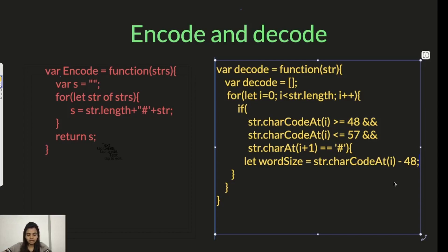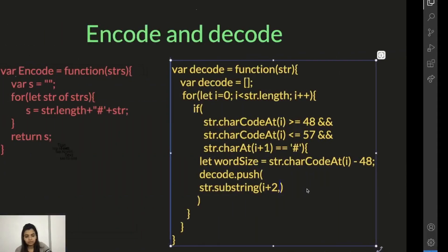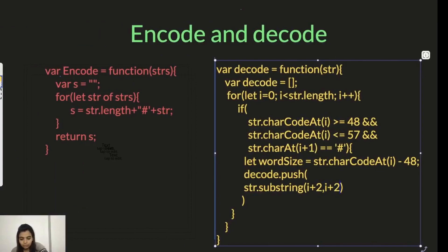Now what we do is we need to take the substring from hash to the length of the word. decode.push, whatever we are reading next should go into the array. string.substring i plus 2, because the first character is a number and the second is a hash. So choose from the next character after hash all the way up to i plus 2 plus the word size. This is the end of the string which we need.